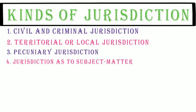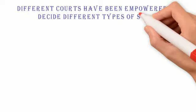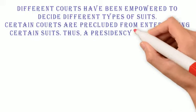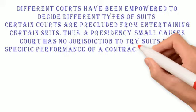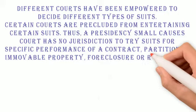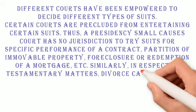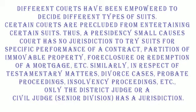4. Jurisdiction as to Subject Matter: Different courts have been empowered to decide different types of suits, and certain courts are precluded from entertaining certain suits. Thus, a Presidency Small Causes Court has no jurisdiction to try suits for specific performance of a contract, partition of immovable property, foreclosure or redemption of a mortgage, etc. Similarly, in respect of testamentary matters, divorce cases, probate proceedings, insolvency proceedings, etc., only the District Judge or Civil Judge Senior Division has jurisdiction.